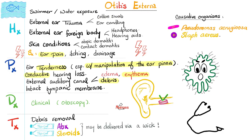Otitis externa is swimmer's ear, so risk factors include water exposure or trauma to the external ear, such as cotton swabs, ear candling. I've seen people cleaning their external ear with car keys — that's how bacteria get you. Also, objects occluding the external ear such as headphones, hearing aids, skin conditions like atopic dermatitis or contact dermatitis.